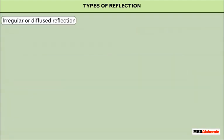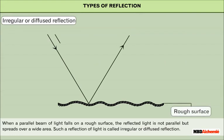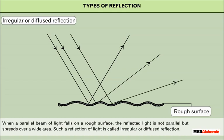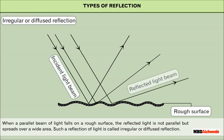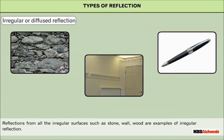When a parallel beam of light falls on a rough surface, the reflected light is not parallel but spreads over a wide area. Such a reflection of light is called irregular or diffused reflection. In this case, images are not formed. Reflections from all irregular surfaces such as stone, wall, and wood are examples of irregular reflection.